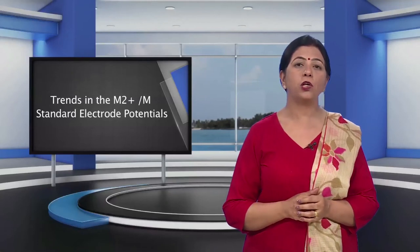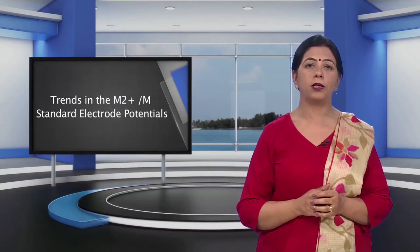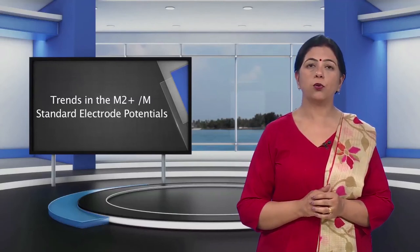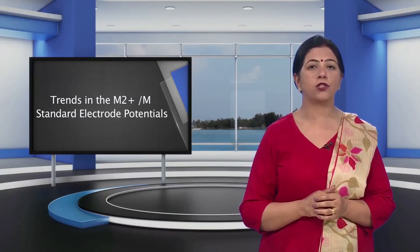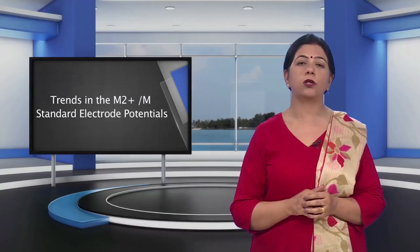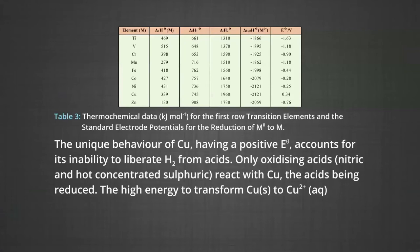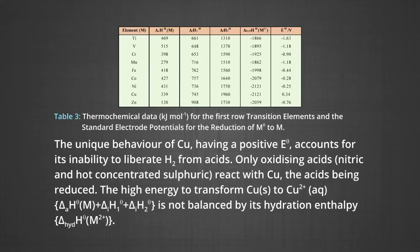The observed values of E° and those calculated using the data of the table are compared in the figure. The unique behavior of copper — having a positive standard electrode potential — accounts for its inability to liberate hydrogen gas from acids. Only oxidizing acids like nitric acid and hot concentrated sulfuric acid react with copper. The high energy to transform copper from the solid state to Cu2+ requires three energies; the ionization enthalpies are not balanced by hydration enthalpy.